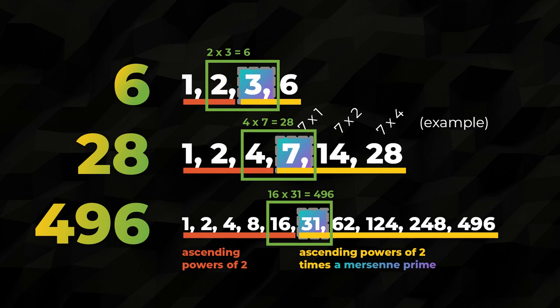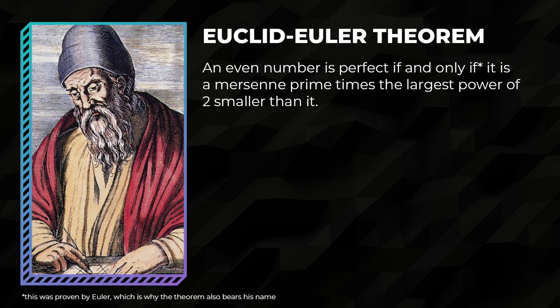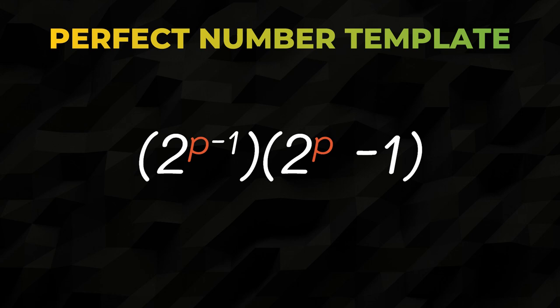These patterns were noted by famed geometer and number theorist Euclid of Alexandria. It was him, 2400 years ago, that proved that a Mersenne prime times the largest power of 2 smaller than it must be a perfect number. In his proof, he formalizes this product into this expression, so it's worth deconstructing it. Think of it like a template for creating perfect numbers. P represents a prime number, and each factor corresponds to one we've already identified.